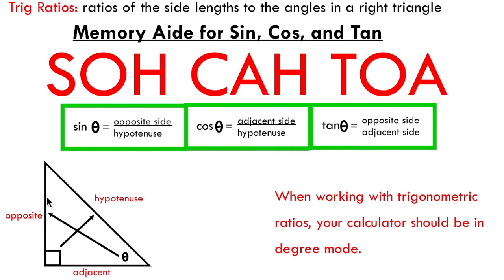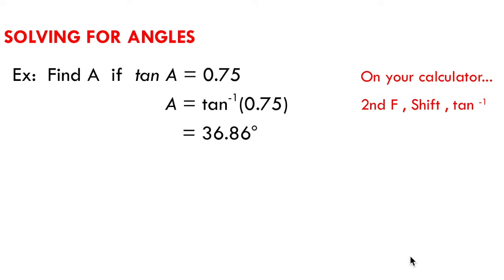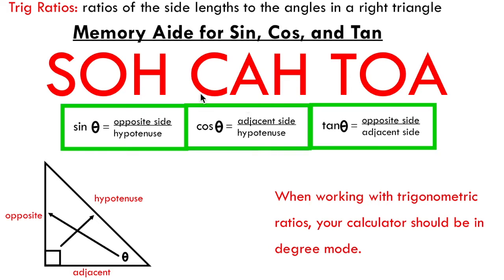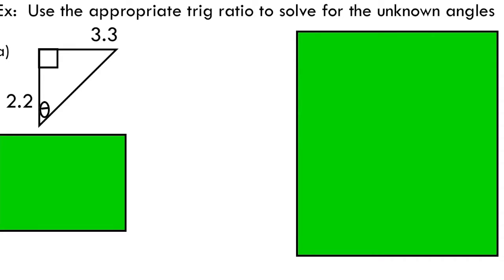The opposite side length is always the one across from the given angle. The hypotenuse is always across from the right angle, and the adjacent side is always next to whatever angle you're looking at. We work in degree mode on our calculator unless exploring radian measure. Now let's combine these two ideas — taking inverse operations and using trig ratios — to solve for some angles.